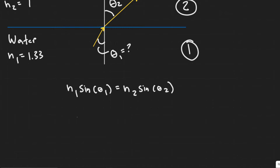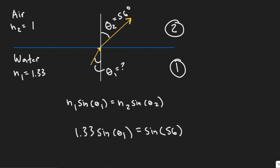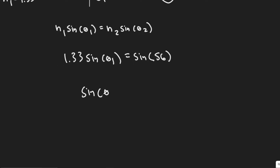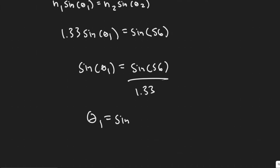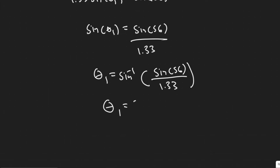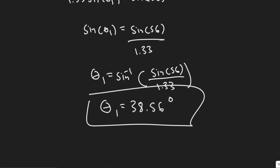Plugging in: 1.33 times sine of theta1 equals 1 times sine of 56 degrees. To solve, divide both sides by 1.33, then take the arc sine of both sides. So theta1 equals arc sine of (sine of 56 divided by 1.33). That gives us theta1 equals 38.56 degrees. So the angle of incidence is 38.56 degrees.